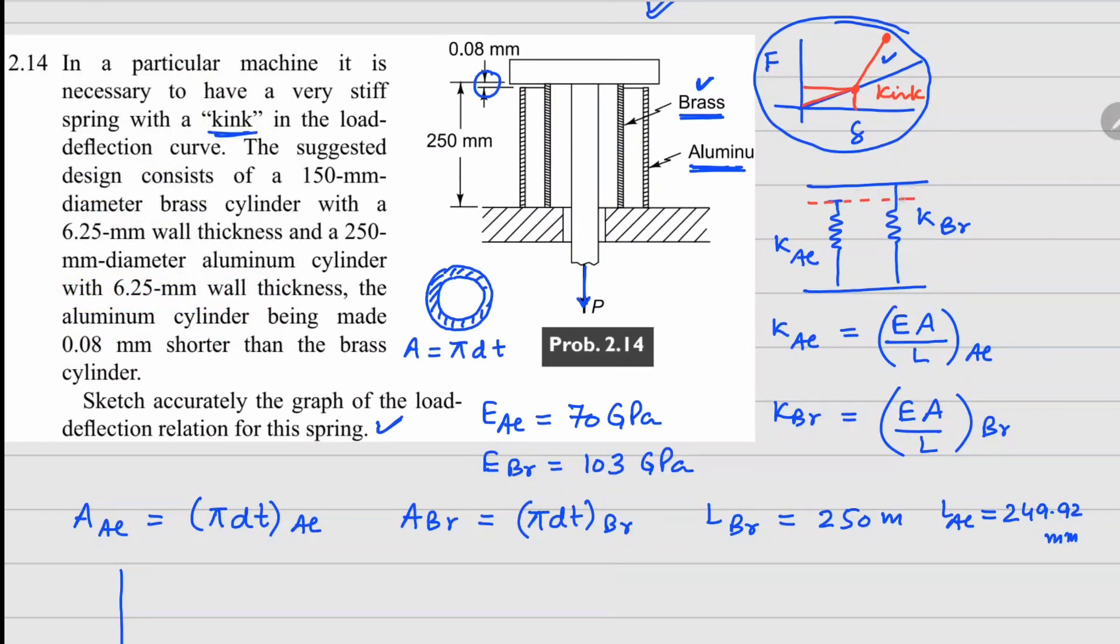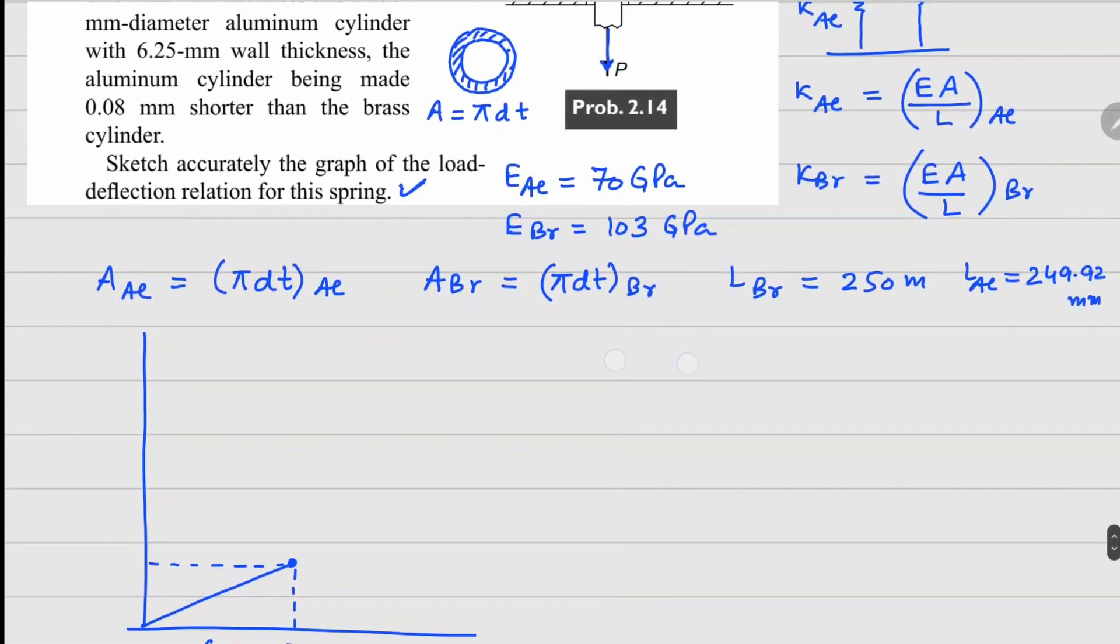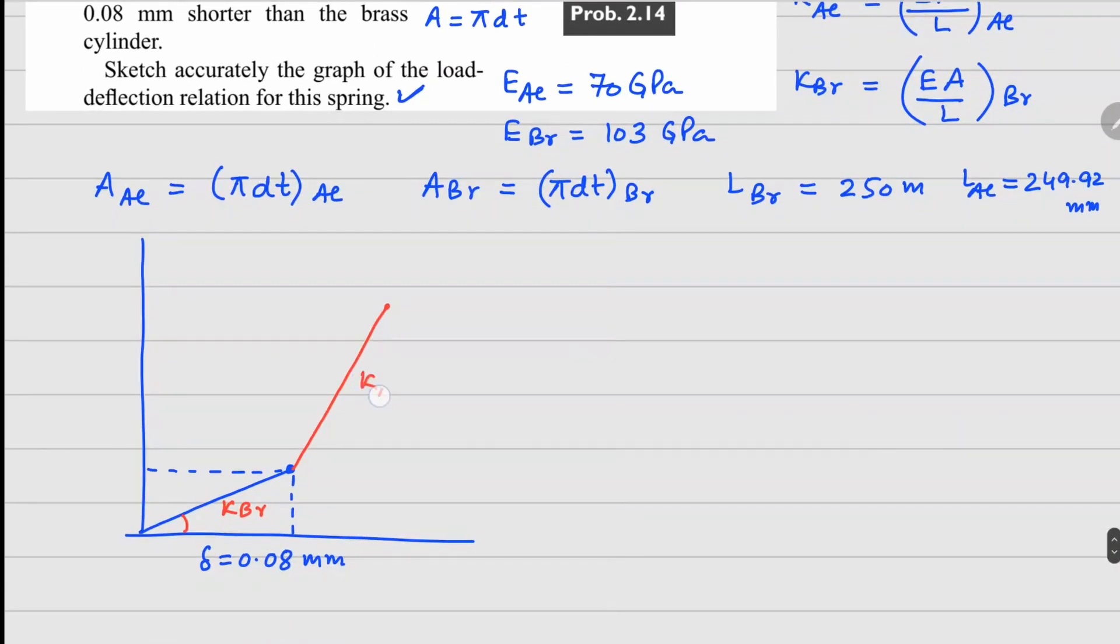Because this will be compressed and till it touches the spring right here, there will not be engagement coming from your aluminum. So only K brass will play a role here. So the slope right here is nothing but your K brass. And after this point when both aluminum and brass will start playing a role, you are going to have your K aluminum plus K brass right here.